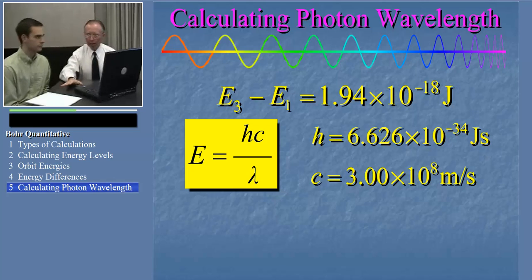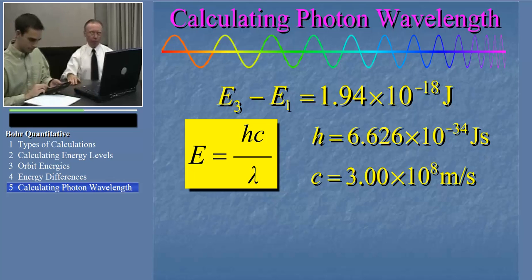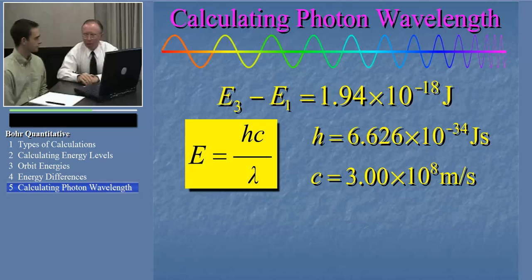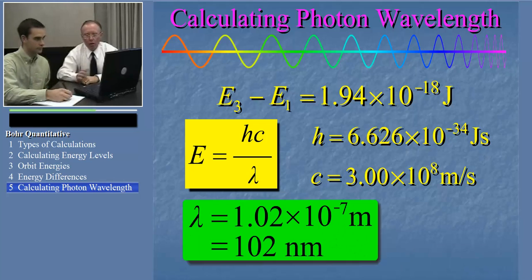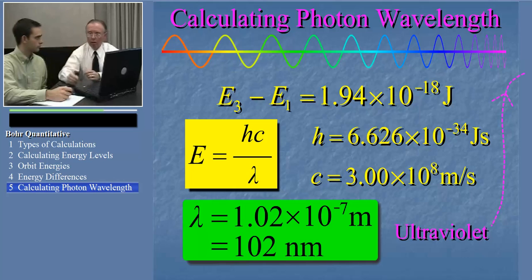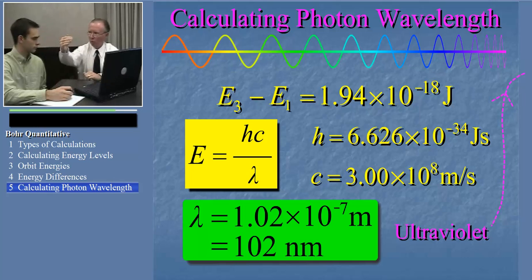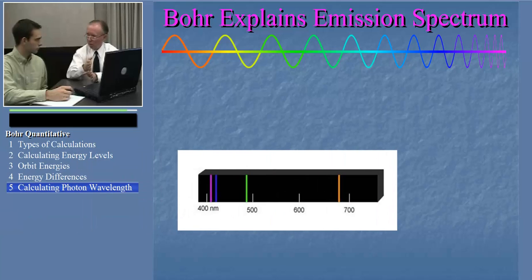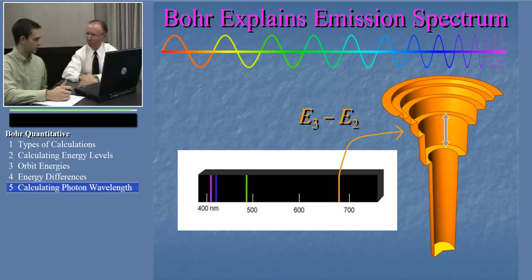Go ahead, calculate the wavelength of the photon emitted when the electron jumps from E3 to E1. This wavelength is actually in the UV region of light, so we wouldn't actually see with our eye the photon emitted when the electron makes this particular jump. But it's interesting that we could do this calculation for the electron jumping from any one of those orbits to any other, to determine what color is emitted. That's exactly what we did in the previous section on the Bohr model when we related each individual line in the emission spectrum to a particular electron jump.